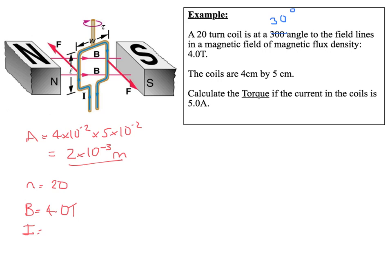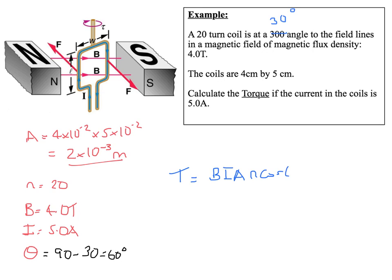We have current I equal to 5.0 amps. For θ, remember we were given the angle between the coil and the field, so we need to find the normal. 90 minus 30 gives us 60 degrees. Plugging that in, torque equals B × I × A × N × cosθ, which is 4.0 × 5.0 × 2×10⁻³ × 20 × cos(60°).